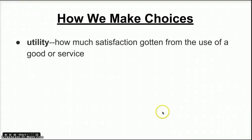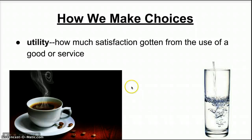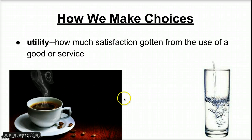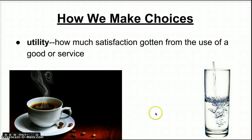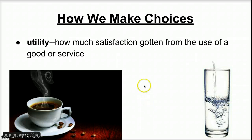The question is: how do we decide how to use our limited resources, whether it's money, time, or something else? We make these choices based on a concept called utility. Utility is simply how much satisfaction, usefulness, or happiness you get from a good or service. For example, in the morning a cup of hot coffee sounds wonderful. But on a hot July afternoon, a cold glass of water will probably satisfy you much more. Utility can change over time and be different for different people, but we all think about the benefit we'll receive from our choices — and that benefit is another word for utility.